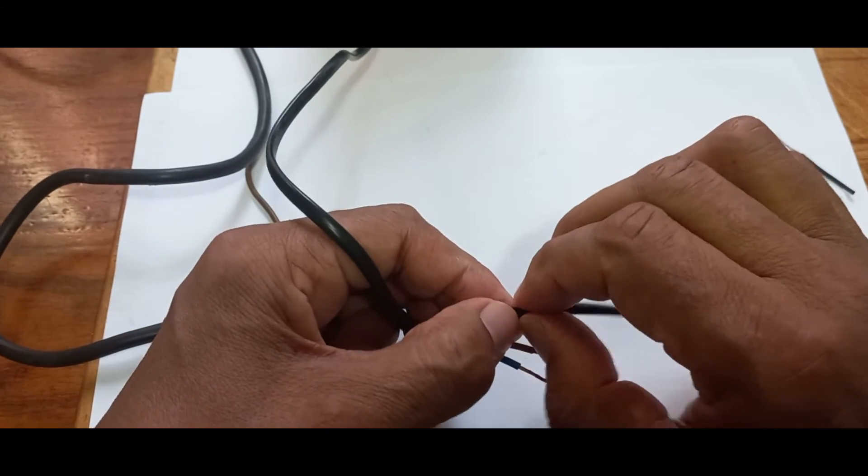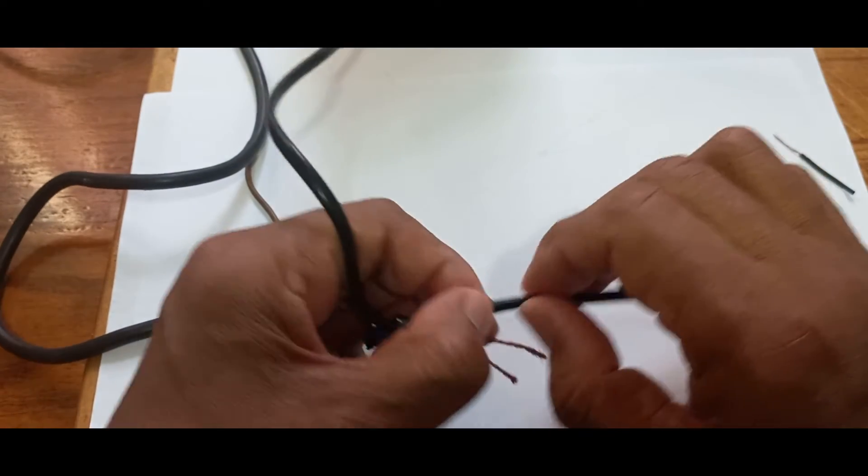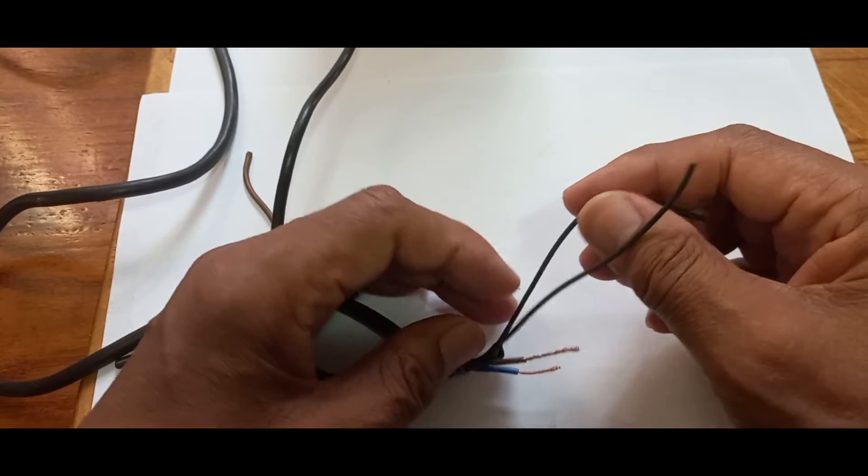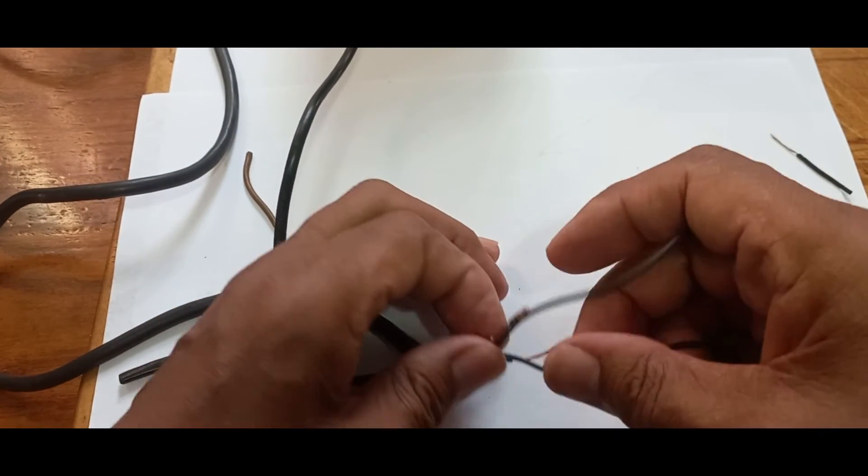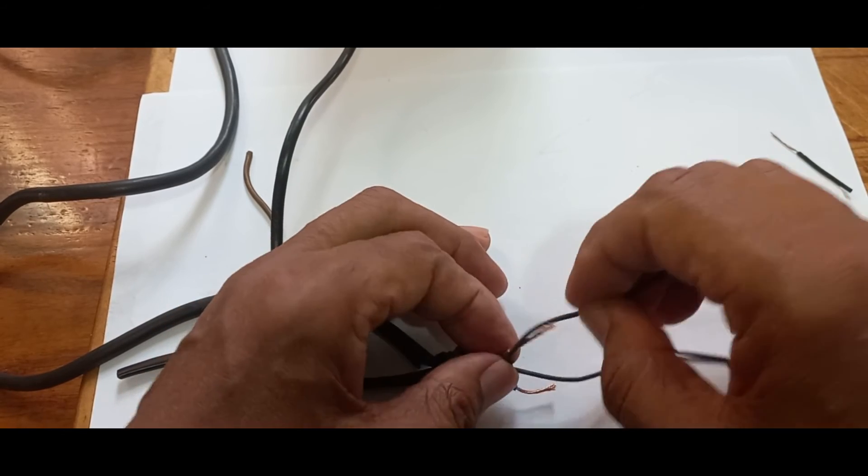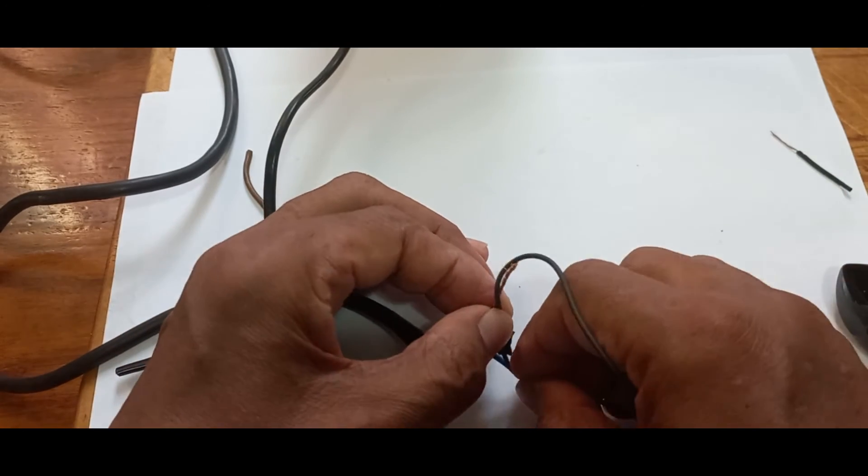I'm going to cut off the insulation on the other thinner cable too. So here are the two thinner cables. I'm just going to attach now each one to one of these other cables here.